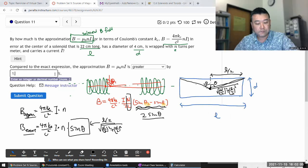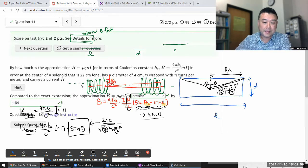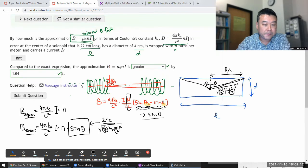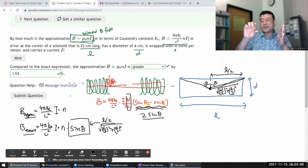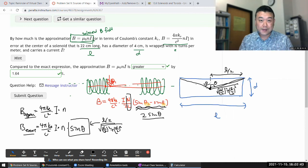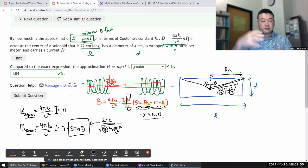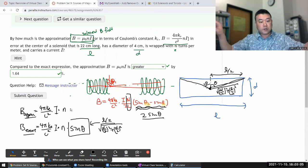As you work through this question, get a sense of how big this solenoid is - 22 cm long, 4 cm diameter. That's a typical, regular-sized solenoid you can hold in your hand. It's not infinite by any sense of the word, but it's pretty close. The approximation for an infinitely long solenoid only differs by 1.64% at the center.